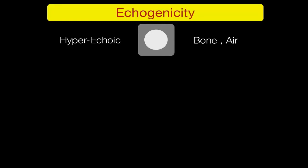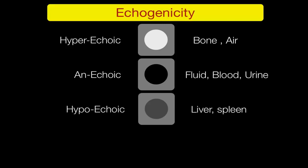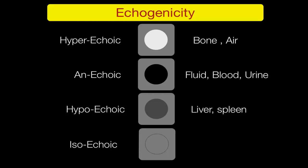Like CT has hyperdense or hypodense structures, in ultrasound we use the term echogenicity. If the structure is very white, we call it hyperechoic, like bone or air. If the structure is black or devoid of an echo signal, we call it anechoic — represented by fluid like blood or urine. If the structure is darker than the surrounding, we call it hypoechoic, like liver or spleen. If the echogenicity is similar to the surrounding, we call it isoechoic.